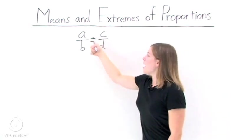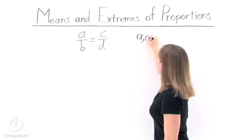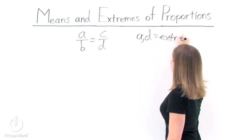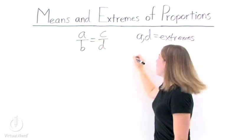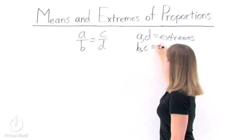Well, look at a and d. A and d are our extremes of this proportion. On the other hand, b and c are our means for this proportion.